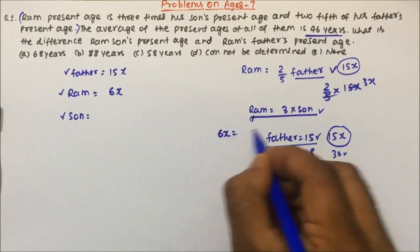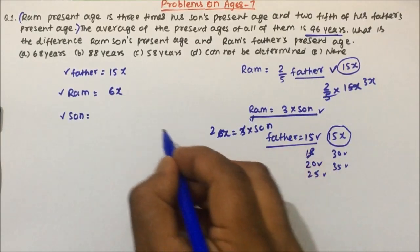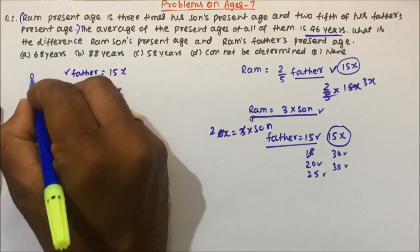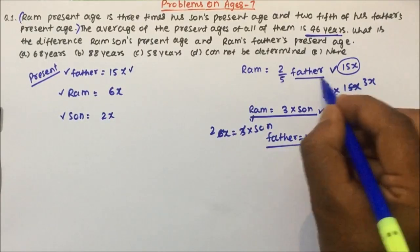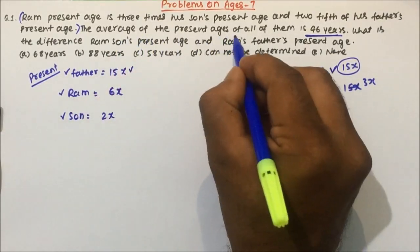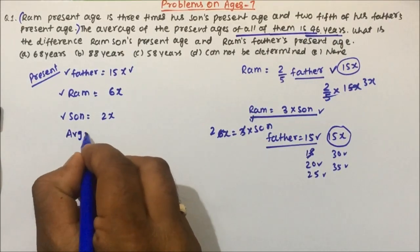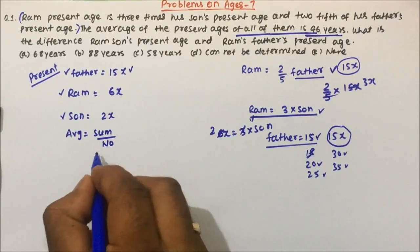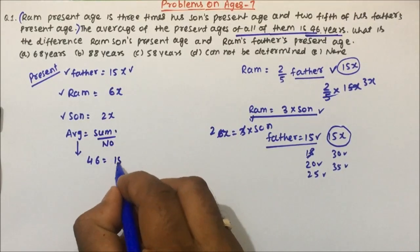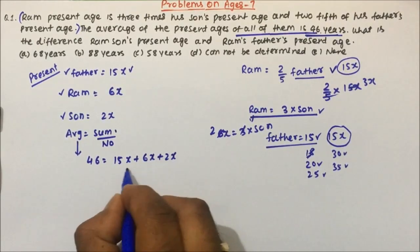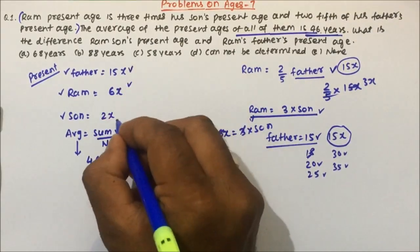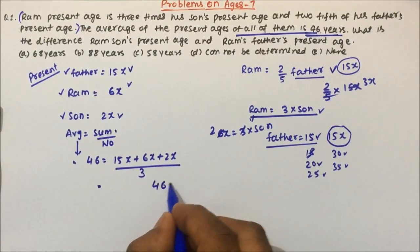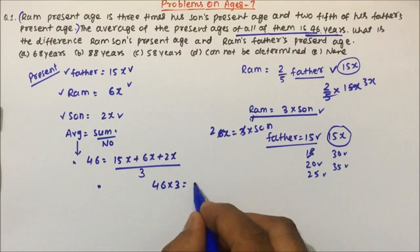Ram's age is 3 times his son's age. So Ram's age is 6x and 6x equals 3 times son's age, so son's age will become 2x. We have got the present ages of father, Ram and son in terms of a variable because there is no age given in the question. Now, the average of the present ages of all of them is 46 years. We know average equals sum divided by number. Average is 46, and the sum is 15x plus 6x plus 2x.